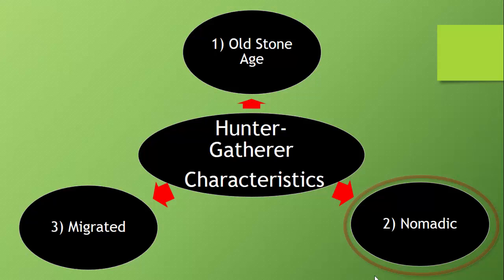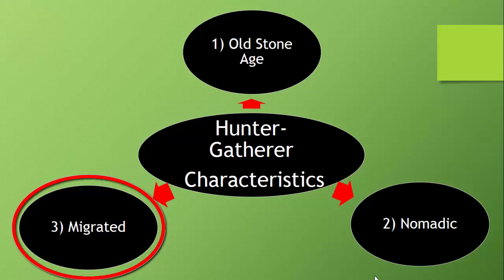Looking at bubble number three, they migrated. There were no stores — they could not go to Lowe's, Foodline, or Walmart to get their food, and they did not have knowledge of farming. So they migrated or moved to follow the animal herds for their meat and other uses. They also gathered fruits, nuts, and other types of plants for their diet. Migrate means to move from place to place.